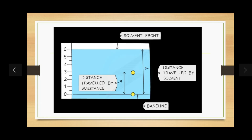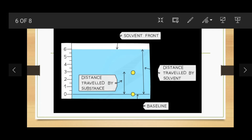Looking at the diagram: the distance traveled by the substance from the starting point to the endpoint of the substance is approximately three centimeters, and the distance traveled by the solvent — for example water — is six centimeters. So the RF value equals three divided by six, which is 0.5. Remember, RF values have no units.